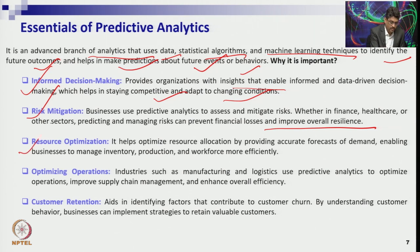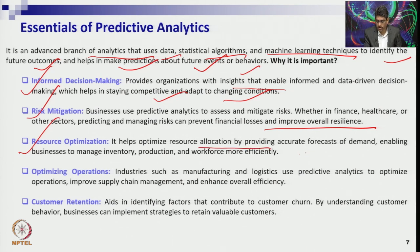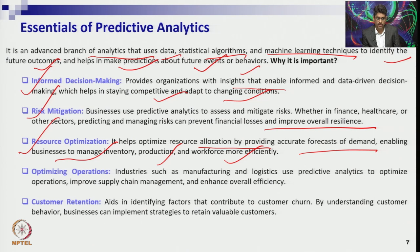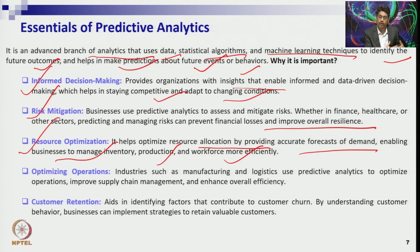Third is resource optimization — you must allocate resources effectively. Predictive analytics helps optimize resource allocation by providing accurate demand forecasts, enabling businesses to manage inventory, production, and workforce effectively. Effective demand forecasting supports inventory management, safety stock planning, procurement planning, and production planning — all forms of resource optimization based on your prediction models.